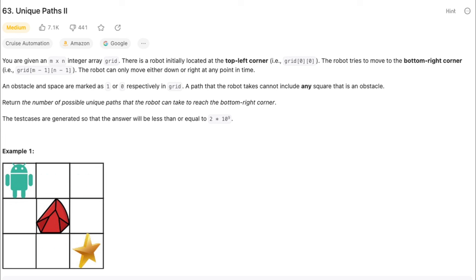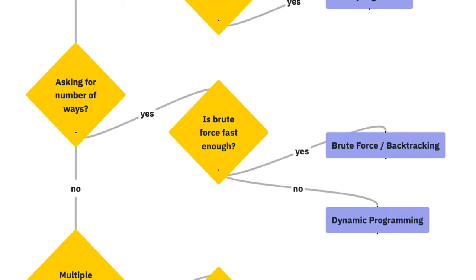Return the number of possible unique paths that the robot can take to reach the bottom right corner. In this problem, we can identify that it requires us to return the number of something, an indication that this task is a counting type problem.